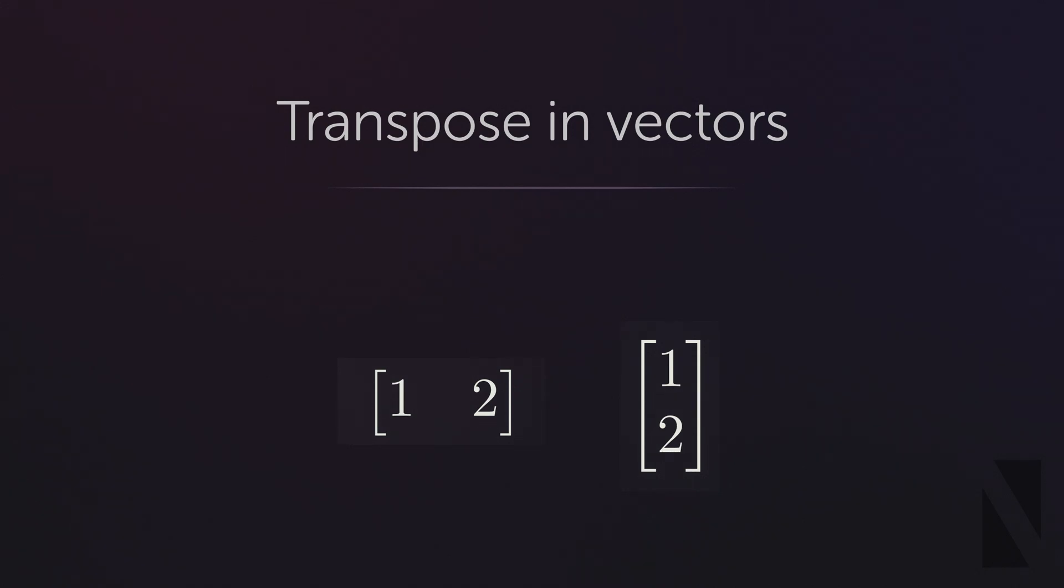But what does transpose mean in vectors? Consider a 3D and 4D vector like this. The transpose of a vector converts column vector into row vector and vice versa, row vector into column vector.